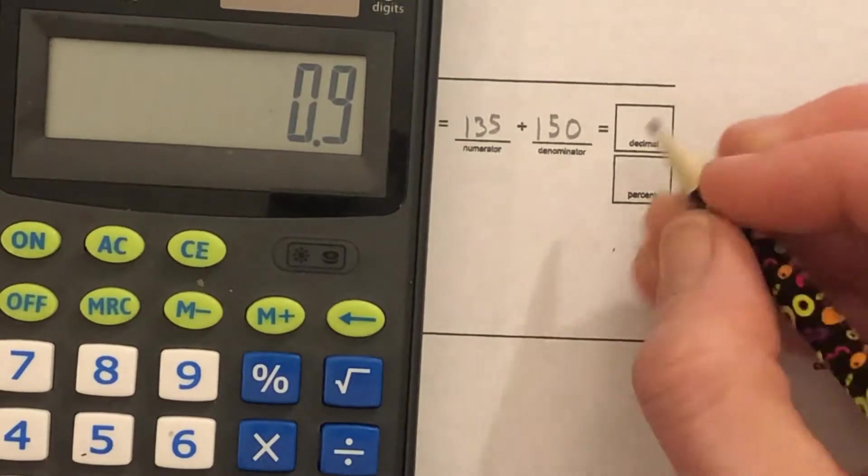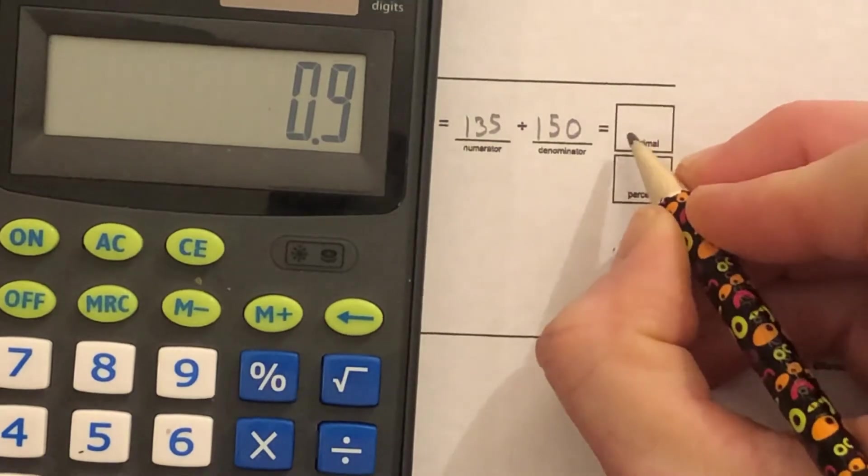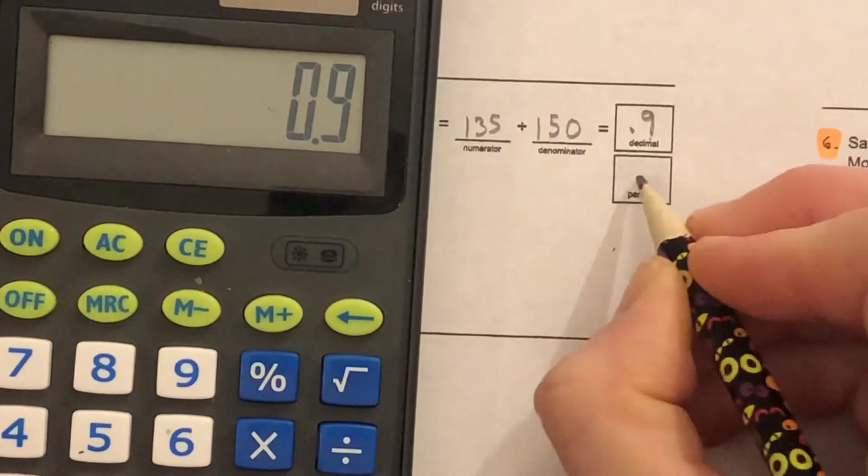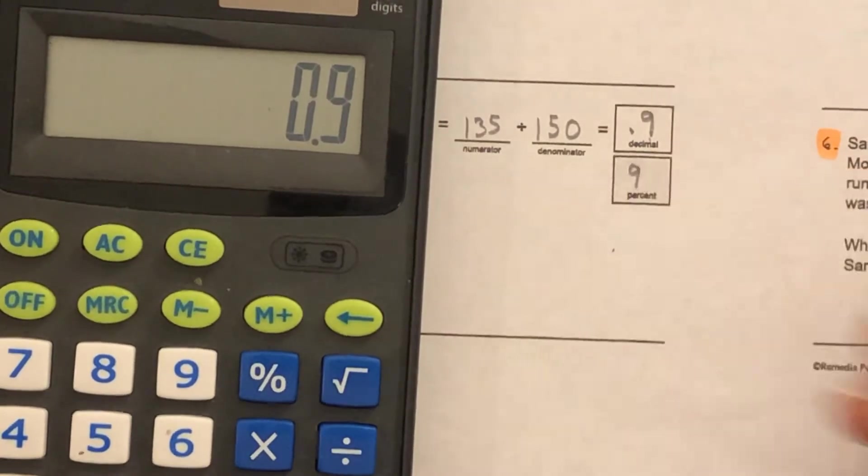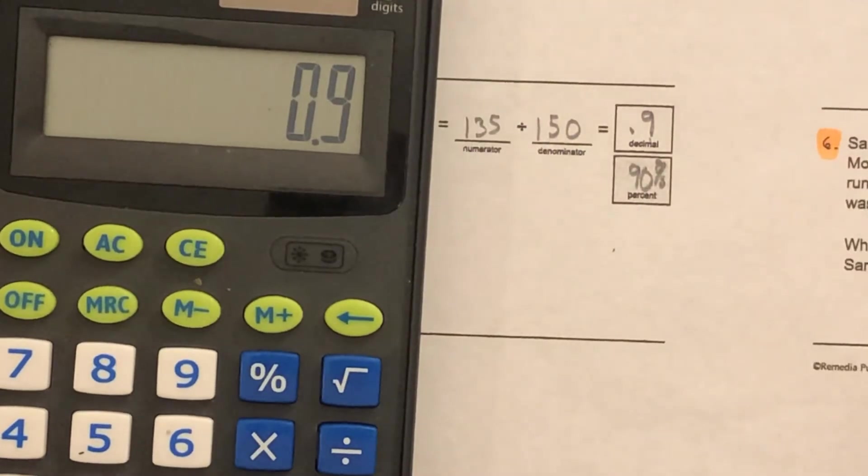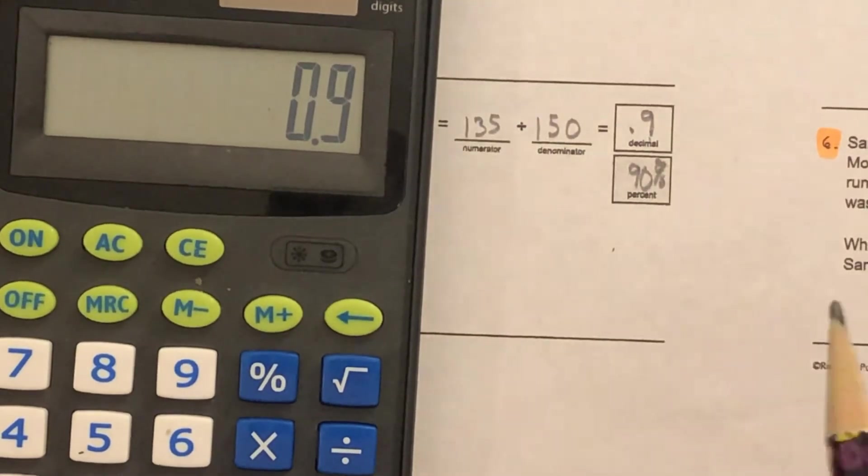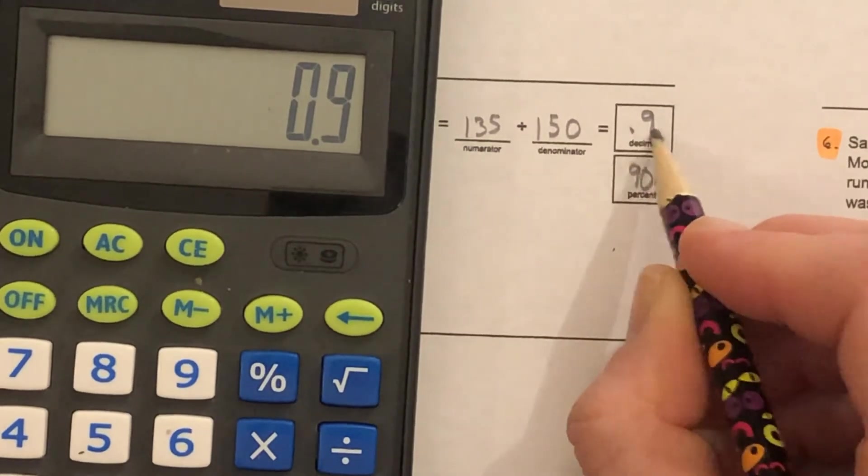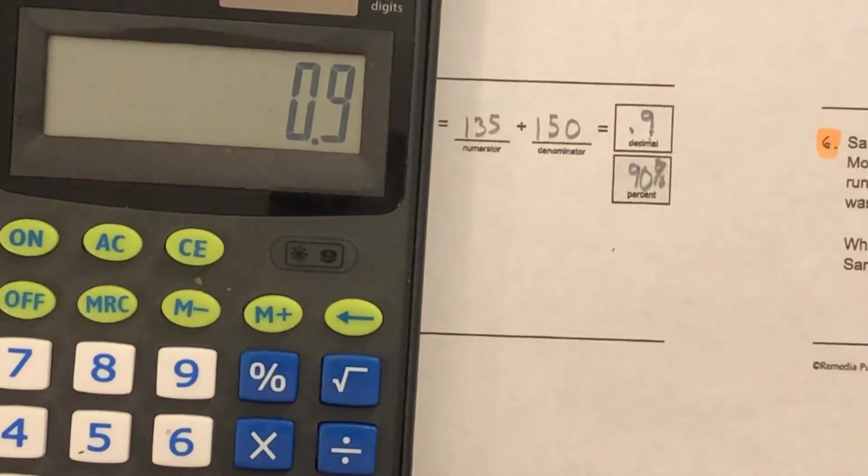In decimal form it's 0.9. That's nine-tenths. In percent that would be 90 percent. 0.09 would be 9 percent. 0.9 is 90 percent, just like 0.9 is 90 cents.